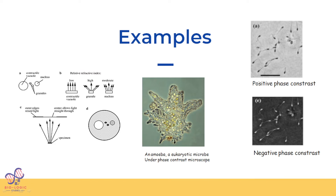Let's look at the images. In positive phase contrast microscopy, destructive interference gives a dark image against a white background. In negative phase contrast, it is the inverse — a bright image against a dark background. This is an image of an amoeba visualized in the phase contrast microscope.